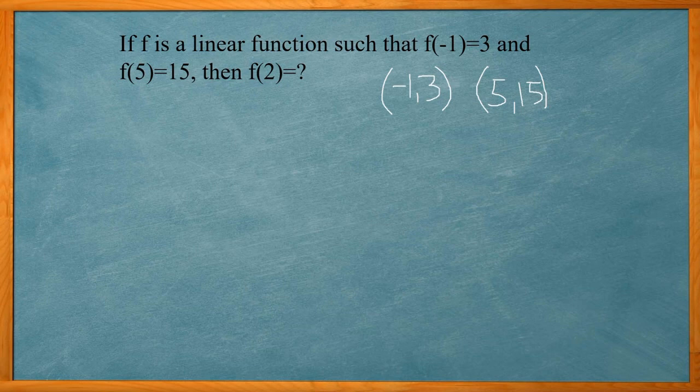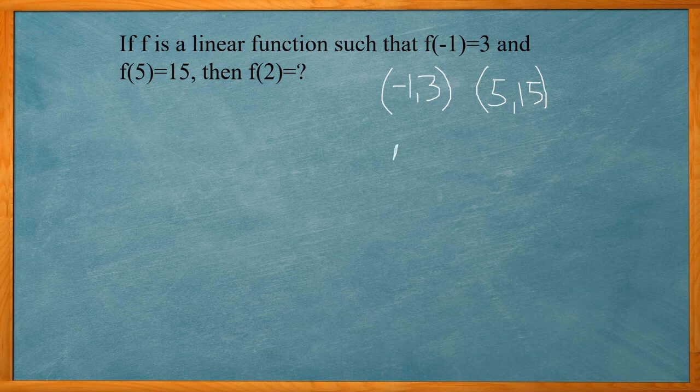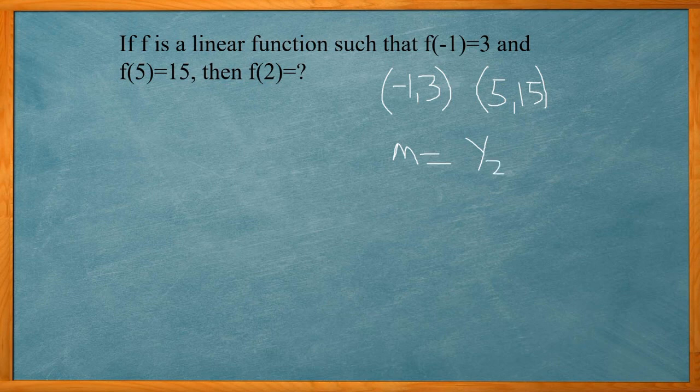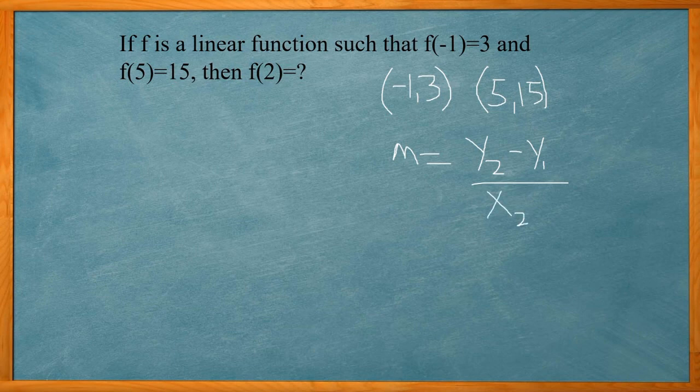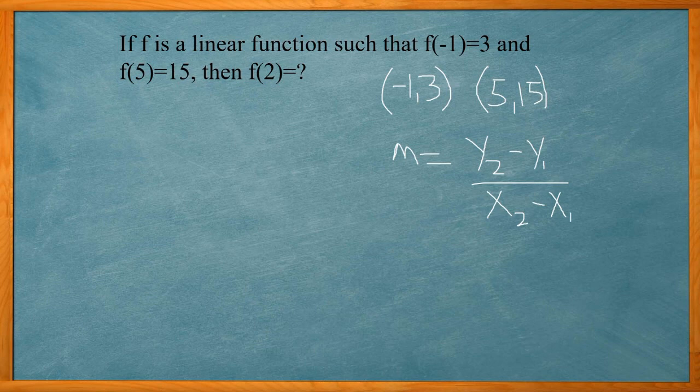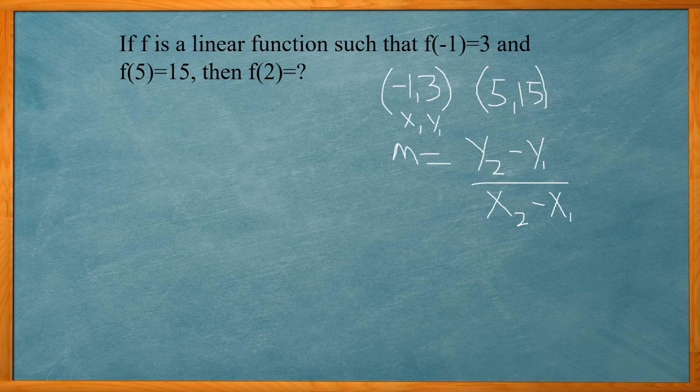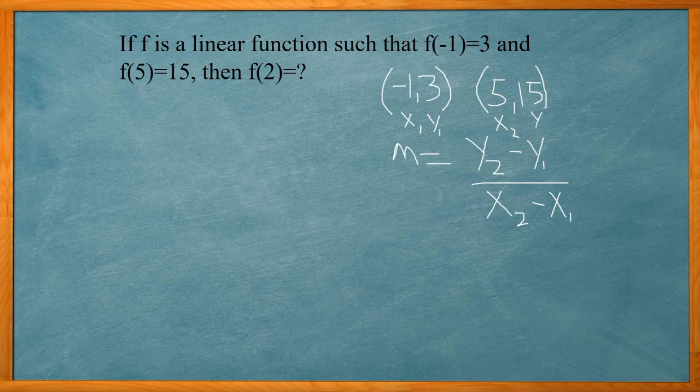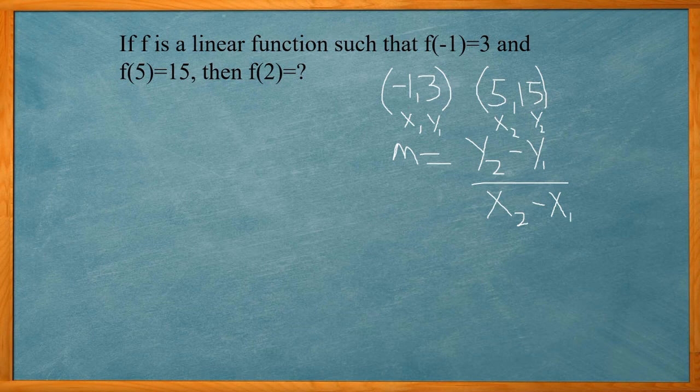So I'm going to use the slope equation where M slope equals y2 minus y1 over x2 minus x1. Now this is x1, y1, and x2, y2. So I group them. One point has the ones together, x and y. Remember your point is always x comma y. So I've got x1, y1, and x2, y2.